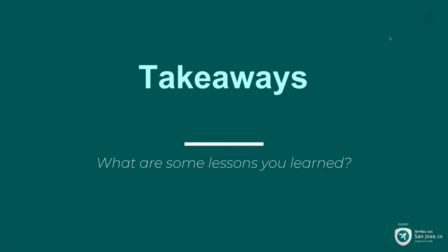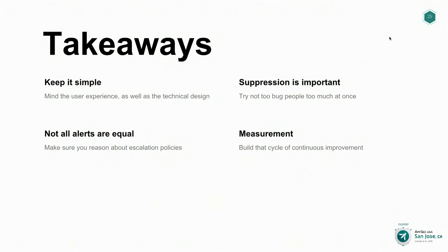Finally, I want to go over four main takeaways to empower you to build similar systems and learn from our mistakes. First, keep everything very simple. If you want to roll out a program like this to all employees, not everyone's an engineer — not everyone knows what an IP address is. It's very helpful to dial alerts down into a very easily digestible few-word summary so an employee can say yes, I know I did that, or no, I have no idea what that is. Also, try to keep the design as simple as possible — the alert state diagram we showed was not thought through before building, and it ended up being a pain to go back and rework.